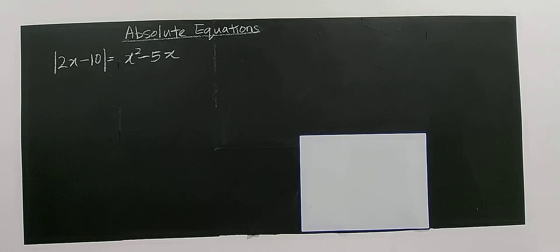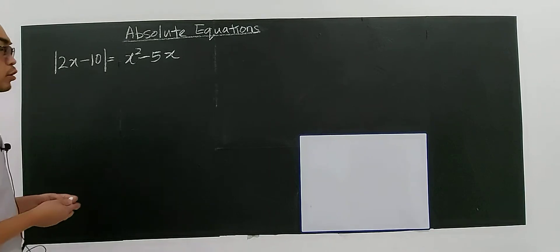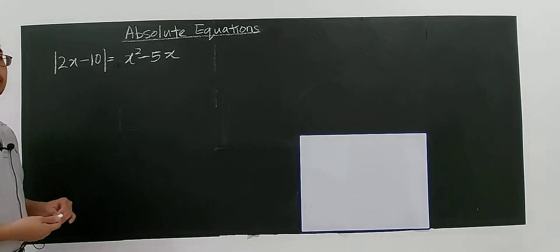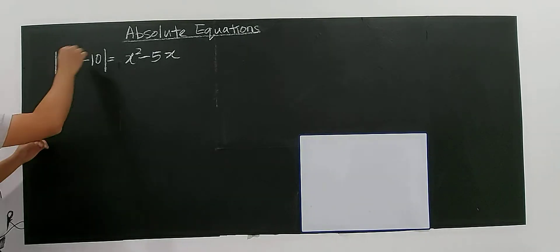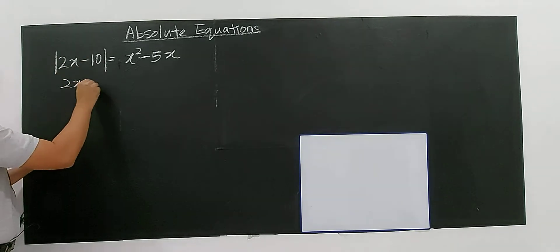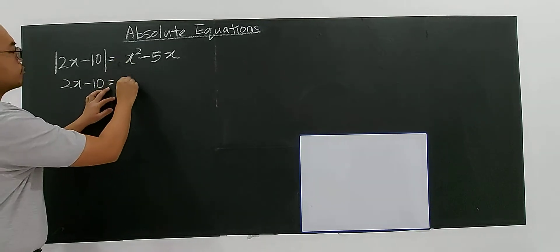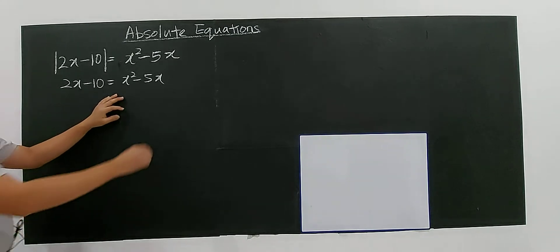Okay, so this is another type of absolute value equation. You can pause the video and try first before looking at how I solve it. The technique is the same — once you open the modulus, you have to set it equal to positive of 5x minus 5, or...